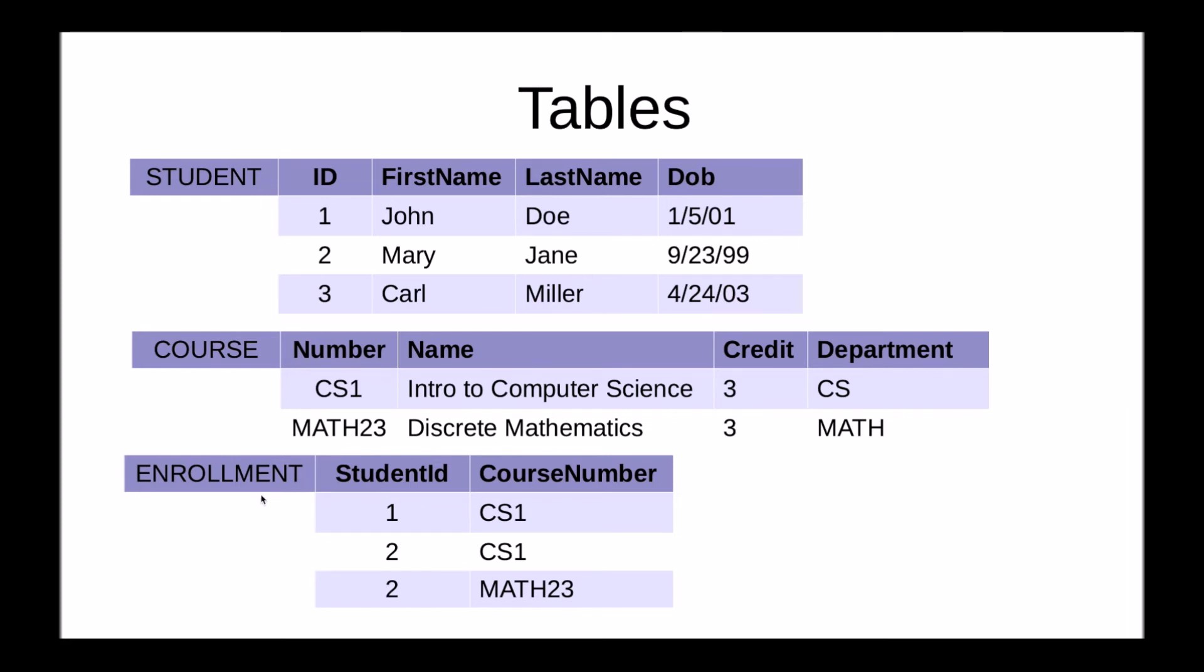Here, it's the table enrollment. It refers to a student ID, and the ID here references the primary key in the student table. And the course number is the primary key in the course table.